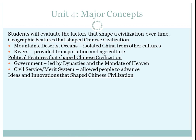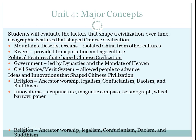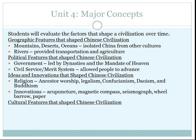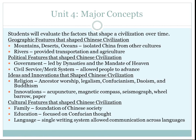The third factor that shaped Chinese civilization was ideas and innovation. You had religion — ancestor worship, legalism, Confucianism, Taoism, and Buddhism. And then innovations: acupuncture, the magnetic compass, seismograph, wheelbarrow, and paper. These all influenced and shaped Chinese civilization. The fourth feature is cultural features: family as the foundation of Chinese society, education focused on Confucian thought, and language — a single written language enabling communication across the country.